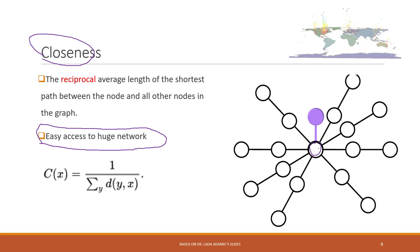For example, this node can easily access all the other nodes, so this node will have the highest closeness in this graph. And this node, because it also has a direct connection to this node, has also relatively higher closeness because it can easily access the other members in this network. So closeness really captures how easy a node can access the huge network.